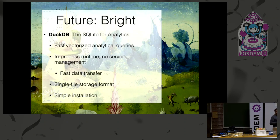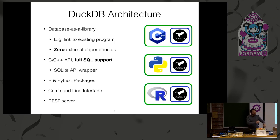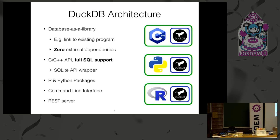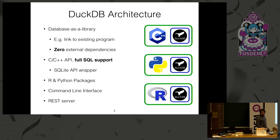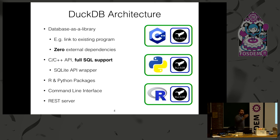DuckDB is a library — think of it as a package you embed into your application. We have zero external dependencies, which took a lot of work but is actually quite necessary for a library to be successful: you shouldn't have to install 57 other programs before you can use it. We have a special build of DuckDB that results in just two files: one header and one implementation. DuckDB's base layer is a C++ API. We have full SQL support, including things like window functions, which I can tell you are not fun to implement — so you don't have to, because you can use DuckDB.